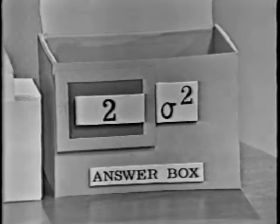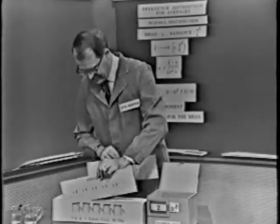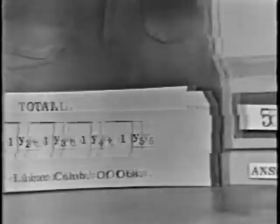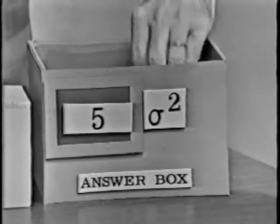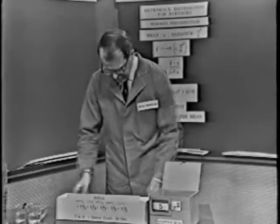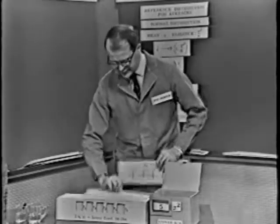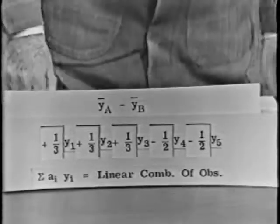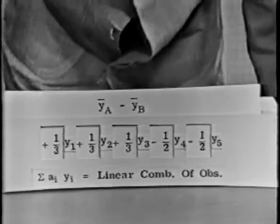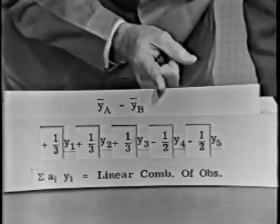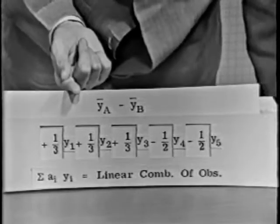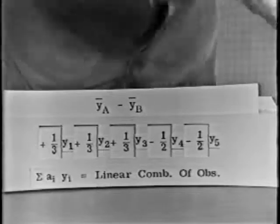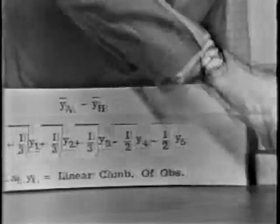Let's try another one. Who'd like to guess what the variance of a total is? Everybody quickly choruses back: five sigma squared. Why is it five sigma squared? Because each coefficient of the observations is one, and you count the sum of squares of those ones. And now finally, how about that more complicated statistic — the difference between those two averages? The average of the first three observations minus the average of the last two observations. The variance is one-ninth plus one-ninth plus one-ninth plus one-fourth plus one-fourth, or one-third plus one-half sigma squared — which equals five-sixths sigma squared.